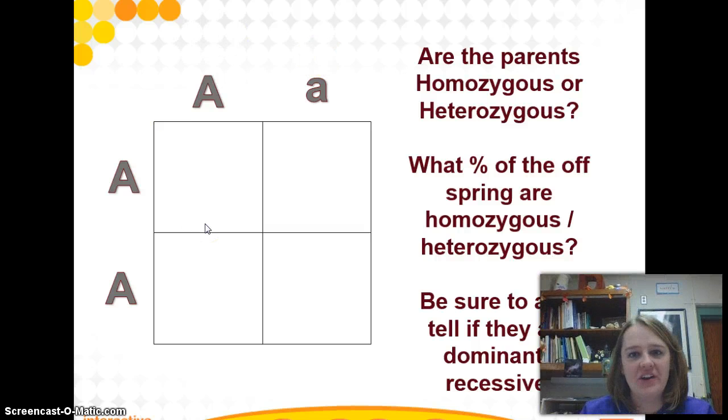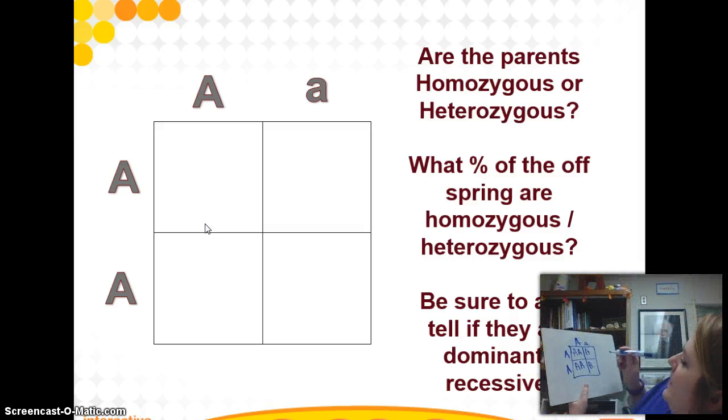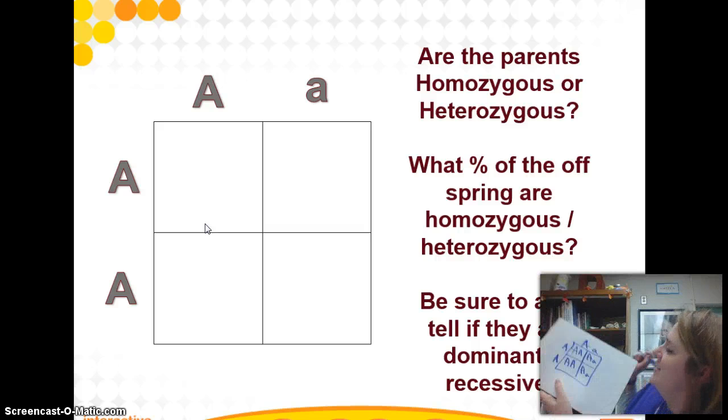And then we have to figure out what percent of their offspring would be homozygous versus heterozygous. So I have my marker again. I'm going to draw my square. Are you drawing yours? And I'm going to put the father's alleles on the top and the mother's alleles on the side. And then I'm going to do my cross. Remember, bring the mother's alleles over and then the father's alleles. It's really hard to do this upside down. I give up. Okay.